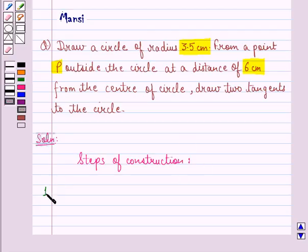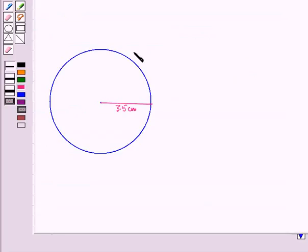Step 1: Draw a circle of radius 3.5 cm. So, like this, we draw a circle of radius 3.5 cm.